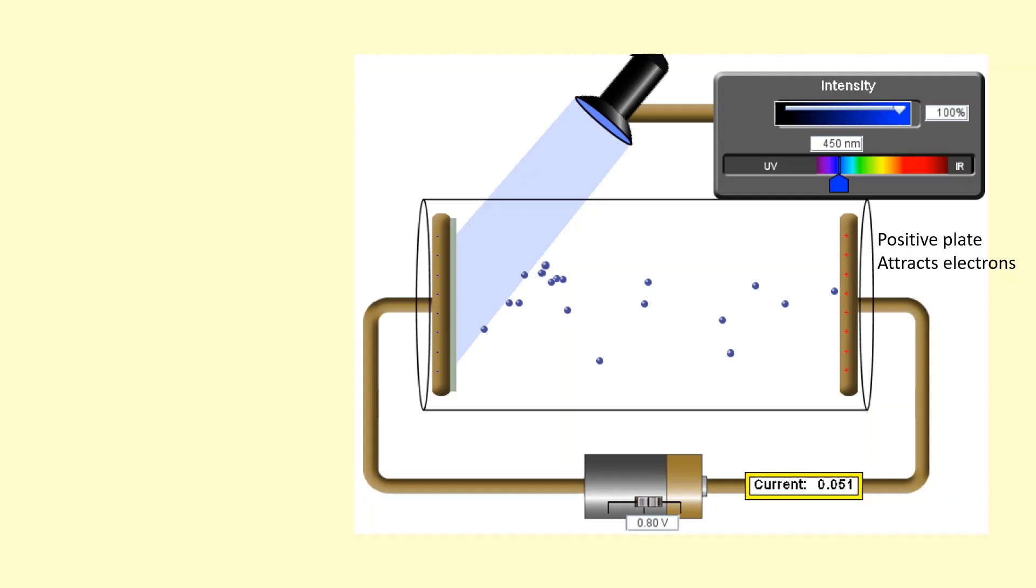That's because the current is going to be mainly determined by the number of electrons going across per unit time. And the thing to determine the number of electrons that are being released is the light and the intensity of the light. Basically, the number of photons per unit time being released by the light.